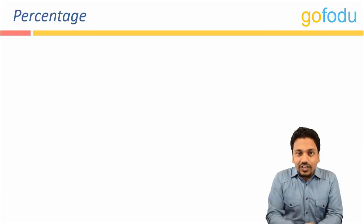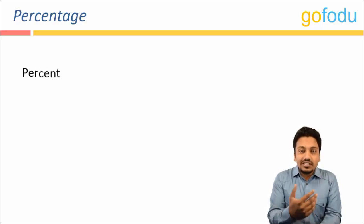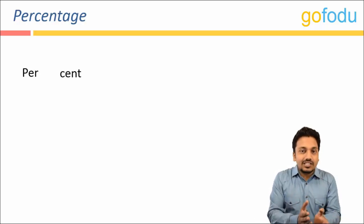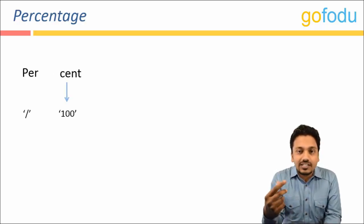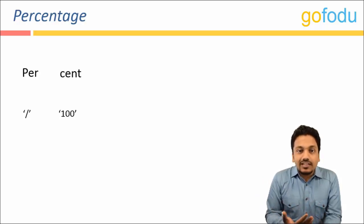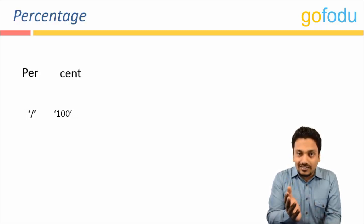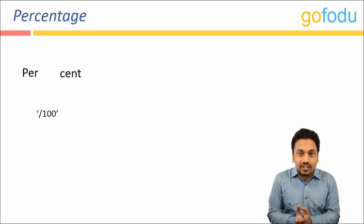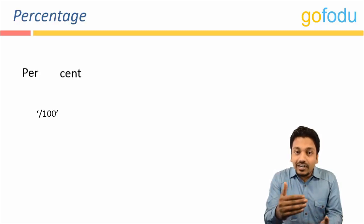Hello, in this video we are going to talk about percentages. So what exactly is a percent? The word percent could be broken into 'per' and 'cent', where 'per' means divided by and 'cent' means hundred. You must have heard this word 'cent' in cricket — when we say Sachin scored a century, that simply means Sachin scored a hundred runs. So percent simply means divided by hundred. Whenever you see the percent symbol, simply replace it in your mind by divided by hundred.